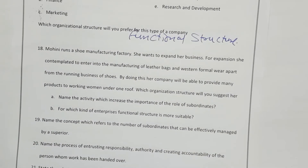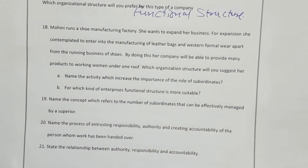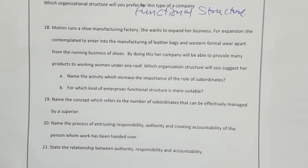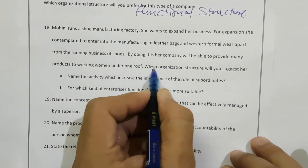Mohini runs a shoe manufacturing factory and wants to expand her business. She plans to enter into manufacturing of leather bags and western formal apparel, apart from her running business of shoes. Her company will be able to provide many products to working women under one roof. Since there is product diversification — shoes, leather bags, formal wear — we will suggest divisional structure.